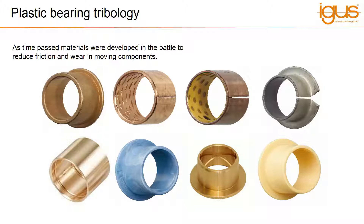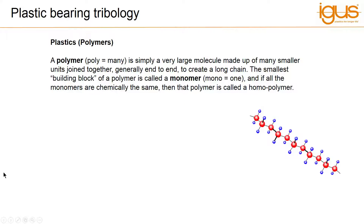Years later, plastic was born and found domestic use within furniture, clothing and tools. This tough base material became a revolution for not only its durability and versatility, it was also incredibly easy to manufacture. Although not all plastics are the same — while all plastics are polymers, not all polymers are plastics. For example, rubbers, more suitably today called elastomers, are also polymers, and they usually give the opposite of the desired effect of a plain plastic bearing.